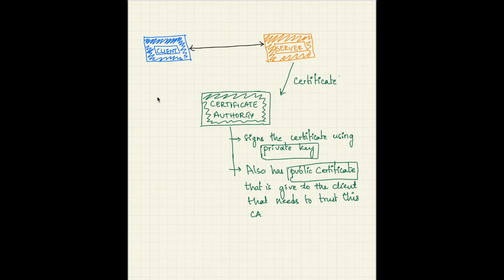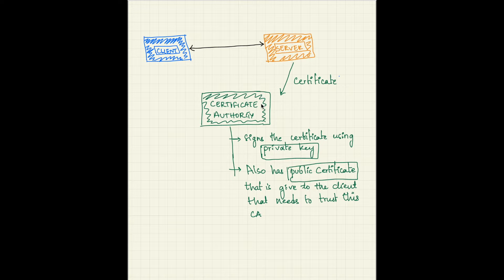Let's dig deep into what a certificate is. We have a client that would like to communicate with a server. The server needs to give a certificate to the client so the client can verify that the server is authentic. To ensure the certificate itself is authentic, we have a Certificate Authority (CA). The server gives its certificate to the CA, which signs it with a private key stored in a very secured location, and gives it back to the server. The server then presents this signed certificate to the client during the handshake.